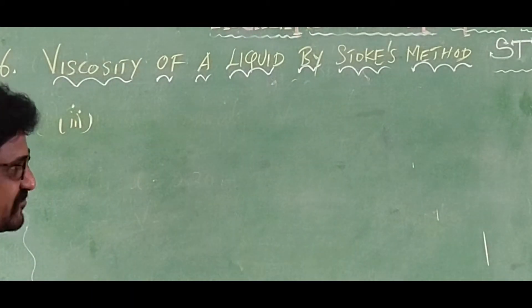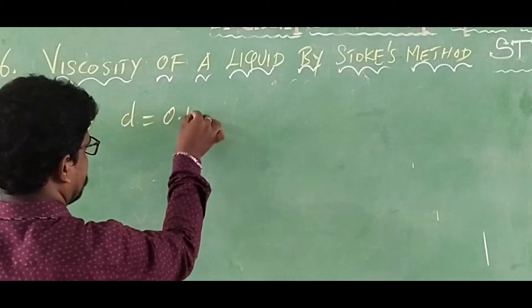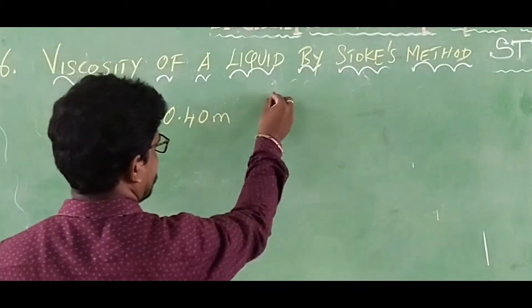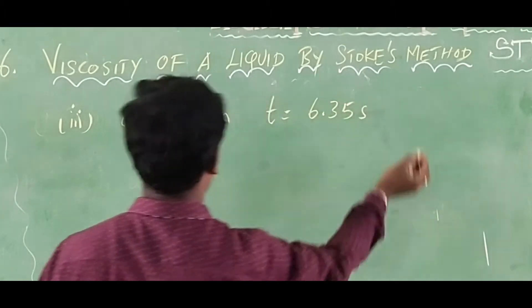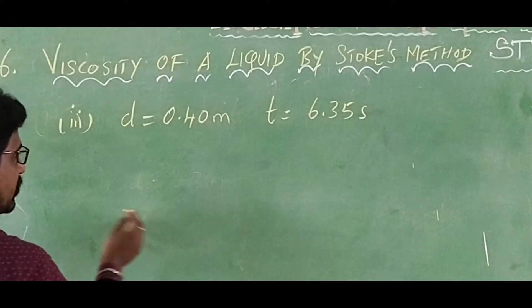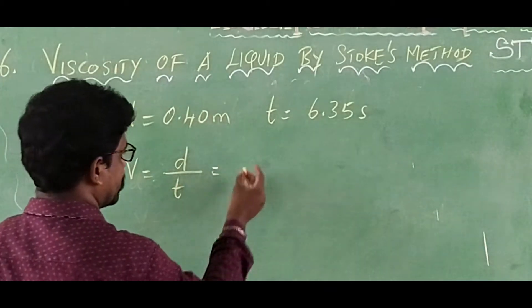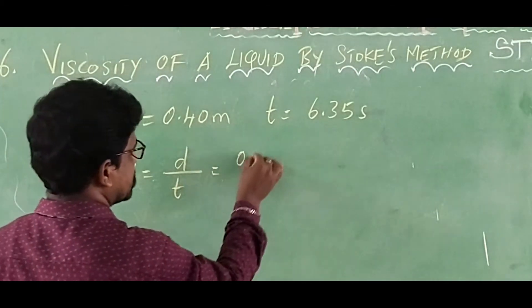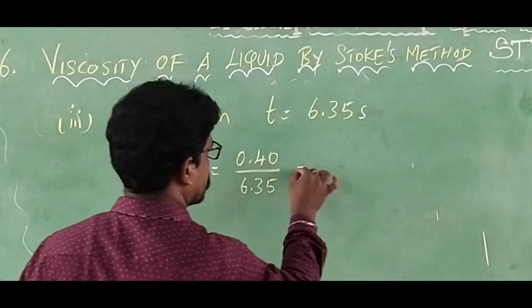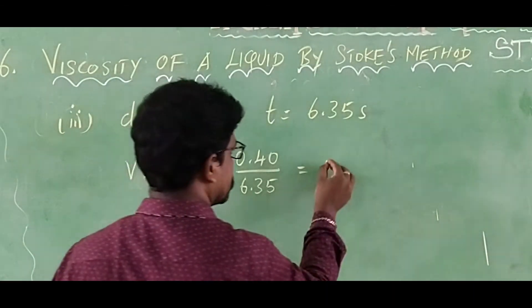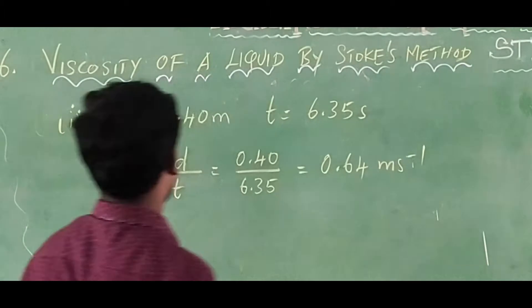For the third reading, the distance traveled by the spherical ball is 0.40 meters and the time taken is 6.35 seconds. The terminal velocity v₃ equals d divided by t, which is 0.40 divided by 6.35, which equals 0.063 meters per second.